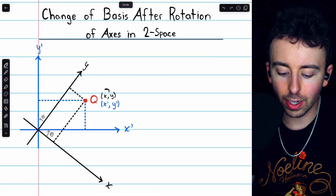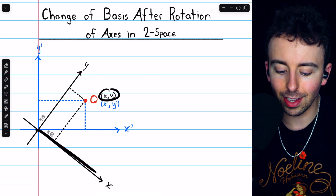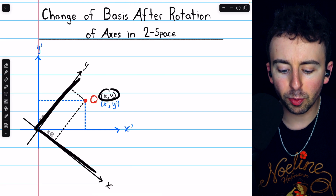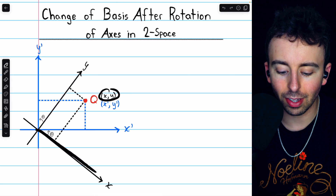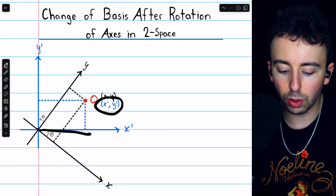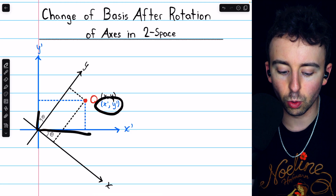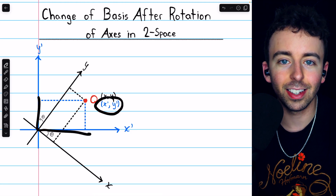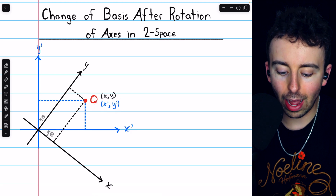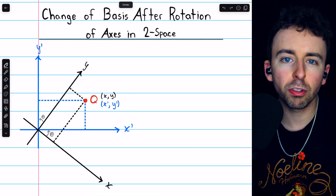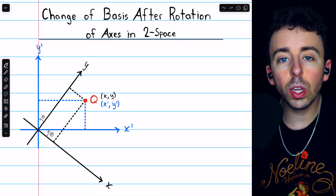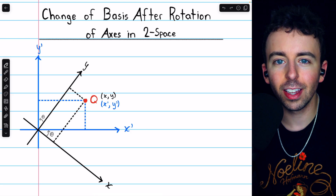It might have had coordinates x, y with respect to the original x, y axes. But if we rotate those axes, certainly it will have a different set of coordinates with respect to those new rotated axes x' and y'. In order to figure out how to express a point with respect to these new rotated axes, we need a transition matrix.